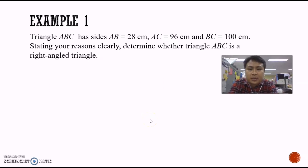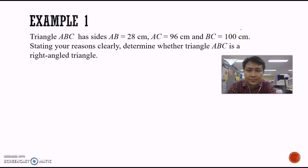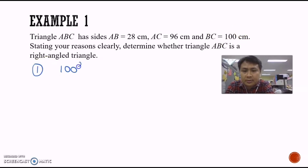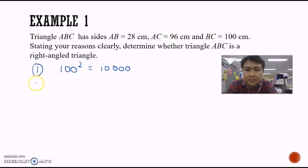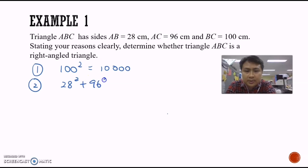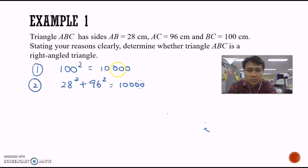In this example, we are given all three sides of the triangle. AB is 28 cm, AC is 96 cm, and BC is 100 cm. You are supposed to state with reasons whether or not triangle ABC is a right angle triangle. First, we determine the longest length — looking at 28, 96, and 100, clearly 100 cm is the longest. So our first step is to calculate 100 squared, which gives 10,000. The second step is to calculate the sum of the squares of the shorter lengths: 28 squared plus 96 squared, which also gives 10,000.